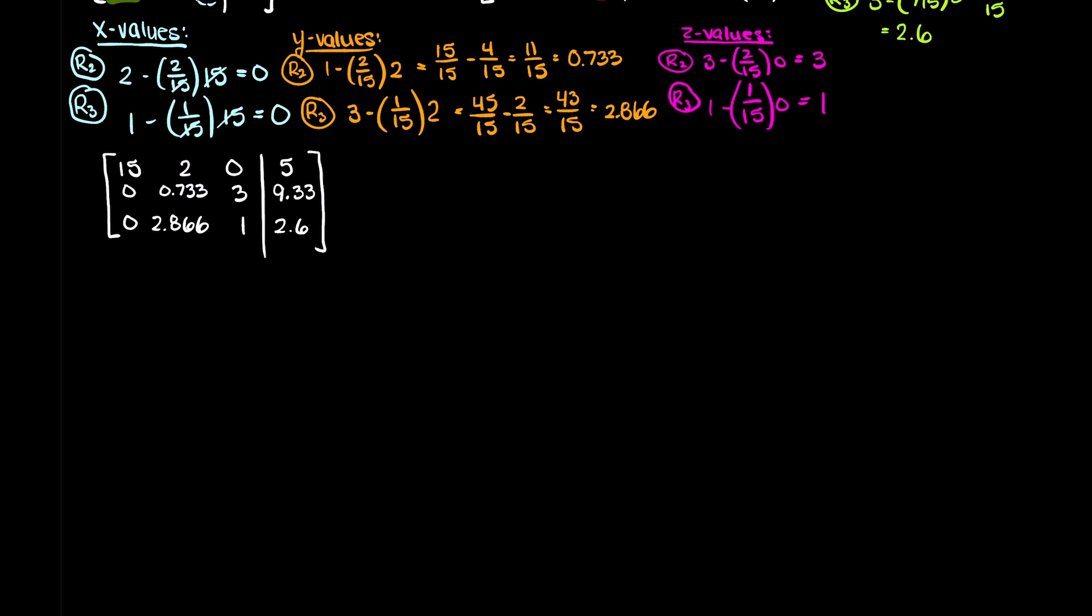Now, we need to check if partial pivoting is necessary again for row 2. So, looking at our main diagonal and down, we can see that the absolute of 2.866 is larger than the absolute of 0.733. Therefore, we use partial pivoting and swap rows 2 and 3. This leaves us with the following augmented matrix.